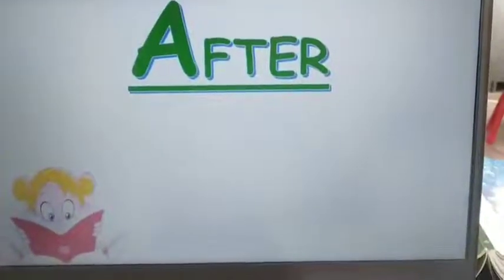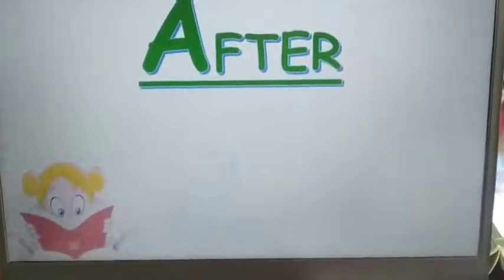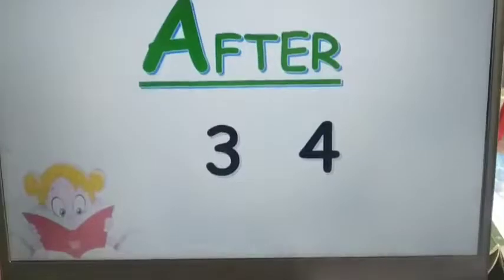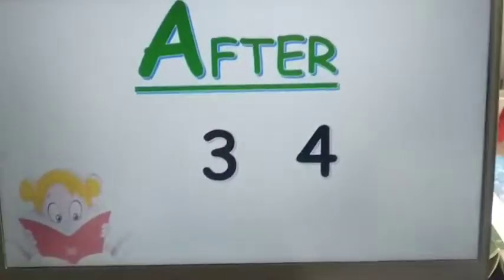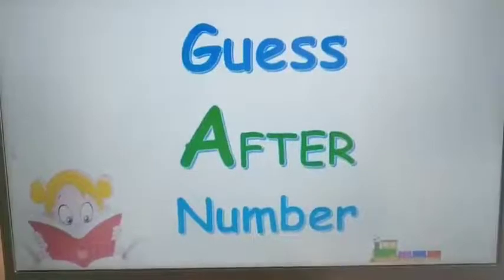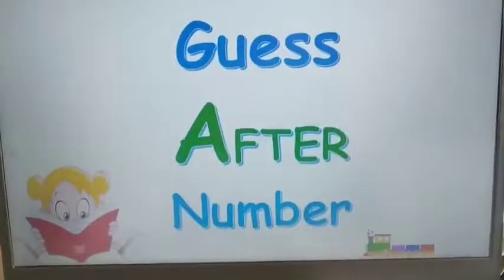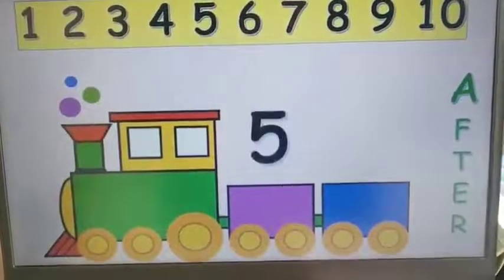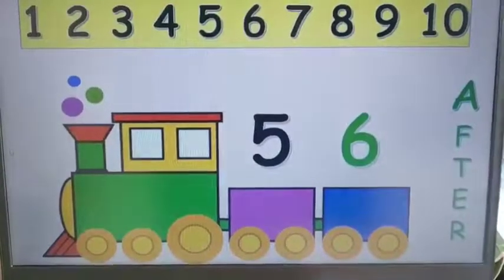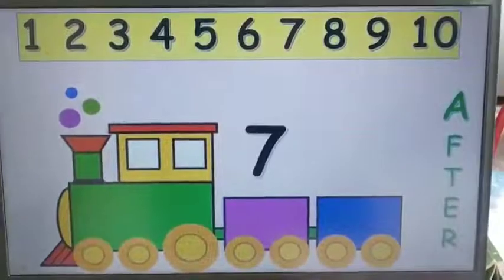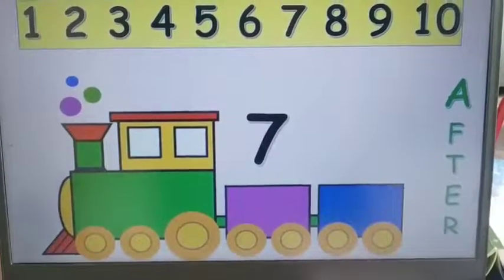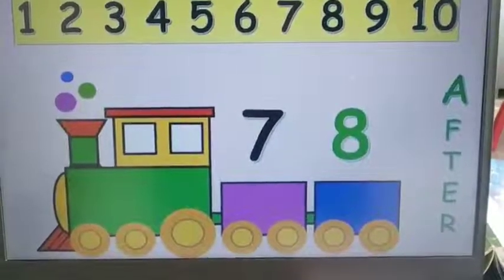Now we are going to look at the next concept — after. What was the meaning of after? Baad mein. Can you tell me what comes after three? Four. And what comes after four? Five. Now we are going to guess numbers that come after. You can see the number line from one to ten. Guess the number that comes after five — six, very good, six comes after five. Now guess the number that comes after seven — eight, very good, eight comes after seven.